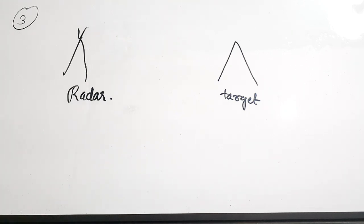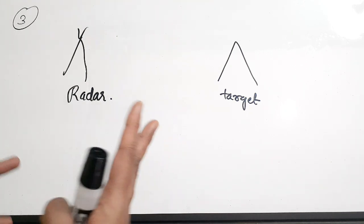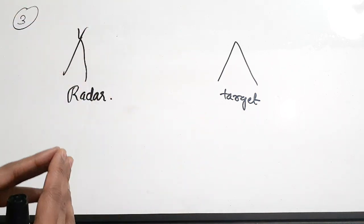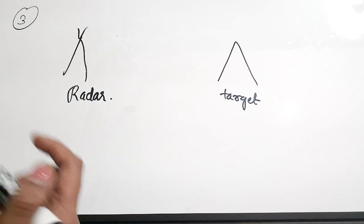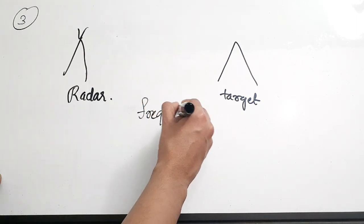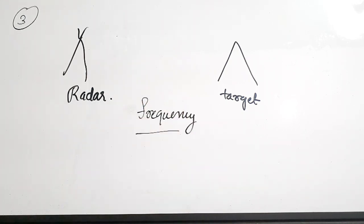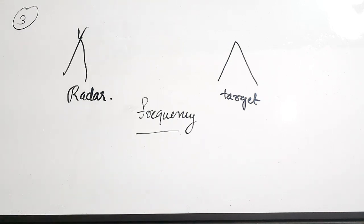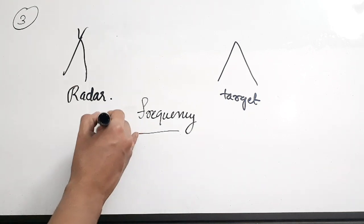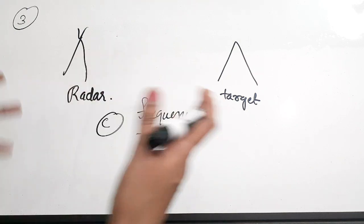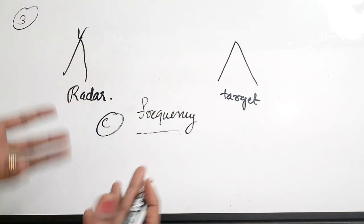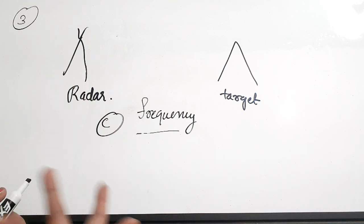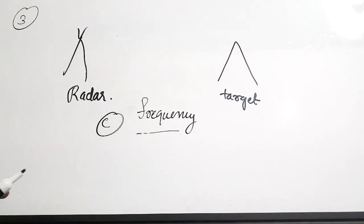When either the radar or the target is moving, there is a shift happening in frequency. This is due to the very famous phenomenon called the Doppler effect. This Doppler shift or frequency shift occurs due to the motion of the target or the radar. The correct answer is option C: frequency shift.